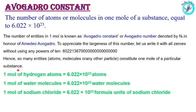One mole of hydrogen atoms is 6.022 × 10²³ atoms. One mole of water molecules is 6.022 × 10²³ water molecules. One mole of sodium chloride is 6.022 × 10²³ formula units of sodium chloride.